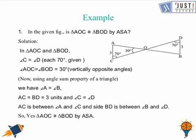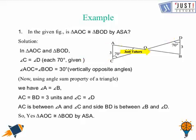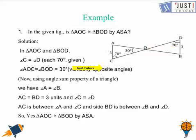Let's take an example. We are given a figure in which we have to prove that triangle AOC is congruent to triangle BOD by ASA. In triangle AOC and BOD, angle C equals angle D — both are 70 degrees, as given. Angle AOC equals angle BOD because they are vertically opposite angles. Using the angle sum property, we can say angle A equals angle B, and we are given that AC equals BD. Since AC is between angles A and C, and BD is between angles B and D, hence by ASA — Angle-Side-Angle — we can prove that triangle AOC is congruent to triangle BOD.